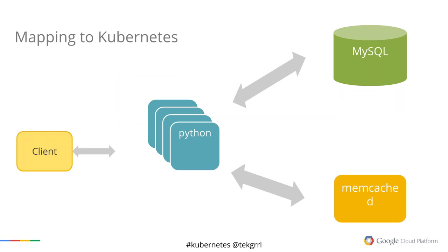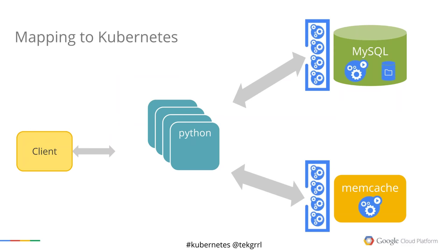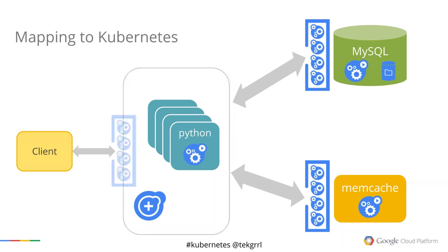How does all this map to our guestbook application? We have MySQL as a pod with a volume, exposed as a service. Memcached is also a pod exposed by a service. These are consumed by multiple Python pods managed by a replication controller. The Python frontend is exposed as a service with an external IP address to clients. The Python pods talk to MySQL via its service and talk to Memcached via its service, while client users talk to the Python frontends via the frontend service.